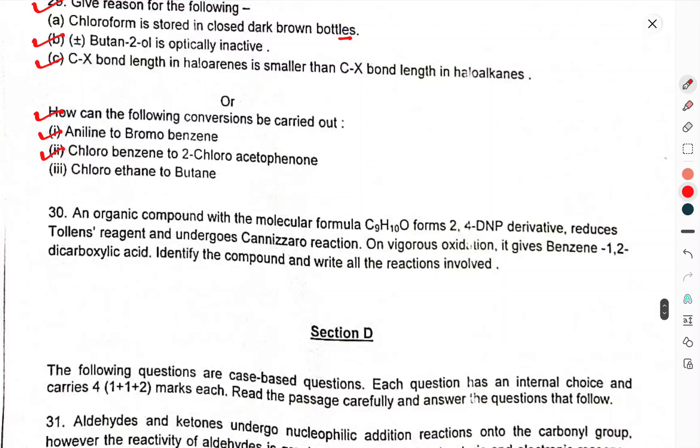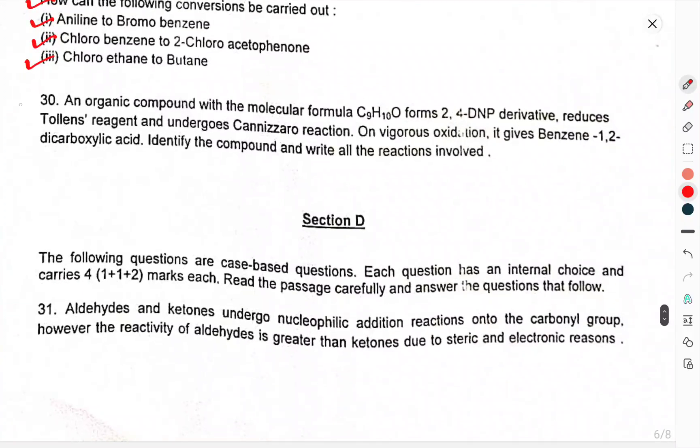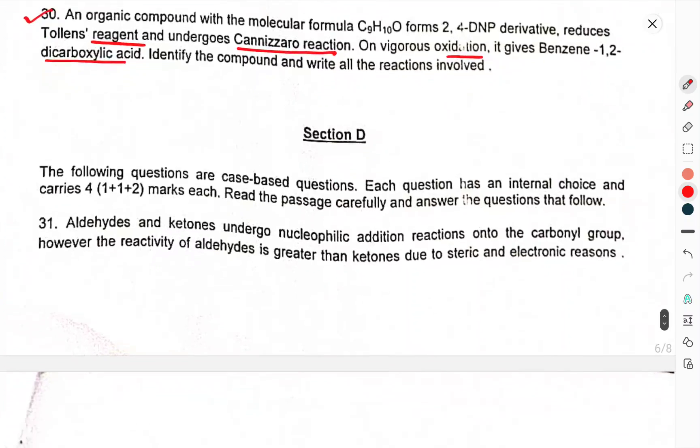Or, how can the following conversions be carried out: Aniline to bromobenzene, Chlorobenzene to chloroacetophenone, Chloroethane to butane. Question 31: An organic compound with molecular formula C9H10O forms 2,4-DNP derivative, reduces Tollens reagent, undergoes Cannizzaro reaction. On vigorous oxidation it gives benzene-1,2-dicarboxylic acid. Identify the compound and write all reactions involved. Section D: These are case-based questions.